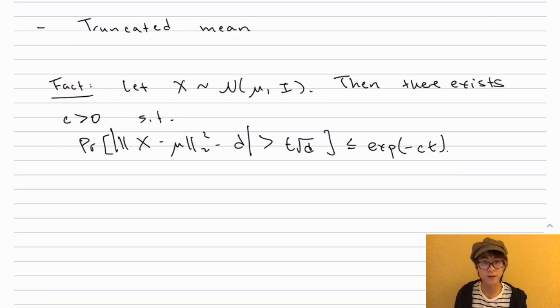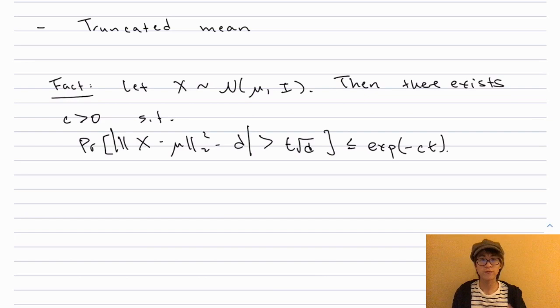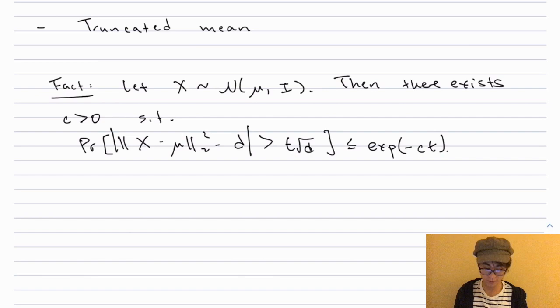Let's see another thing which suffers from the same loss: the truncated mean—the thing that worked in one dimension but will not work quite so well in high dimensions. In high dimensions, the only natural thing to do for a truncated mean is to remove things which are too far away in L2 norm from the true mean. But the problem is that in high dimensions, the norm of a vector is actually very noisy; things are typically very far away from their expectations.